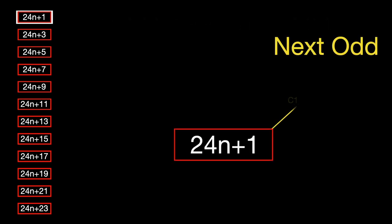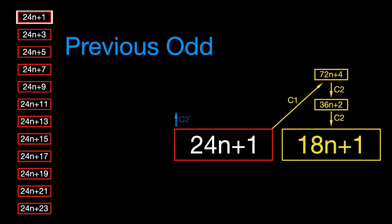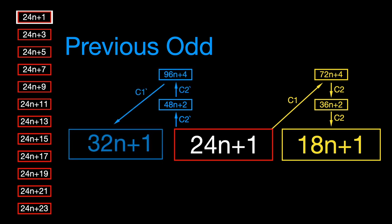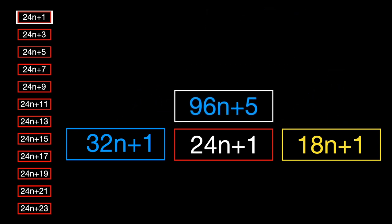Starting with 1 mod 24, we note that we can calculate both the succeeding and preceding odd numbers with certainty because 1 mod 24 will only occur at the end of the chain. We also have the preceding value due to the C3 rule because 1 mod 24 is odd.